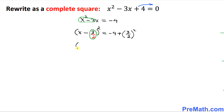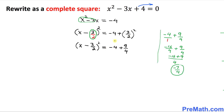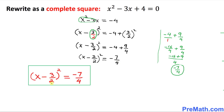So we got on the left hand side x minus 3 over 2 squared, equal to negative 4 plus 9 over 4 when we open this square. On the right hand side, negative 4 can be written as negative 4 over 1, and making the common denominator 4, it turns out to be negative 7 over 4. So our answer is x minus 3 over 2 squared equal to negative 7 over 4.